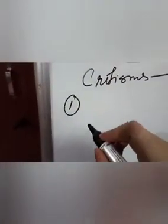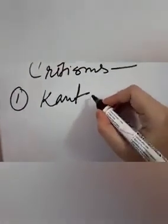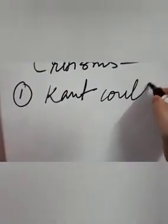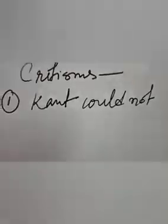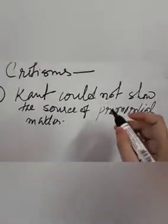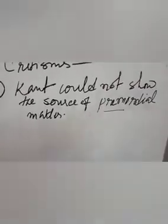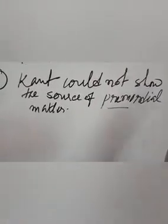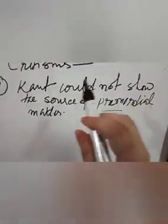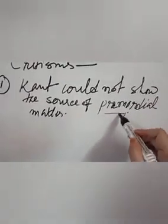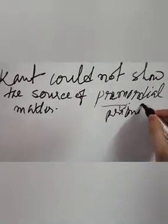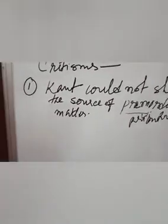The first criticism is that Kant could not show the source of this primordial matter. He said about the existence of the primordial matter — primitive matter — and said that from the primitive matter which was spreading all over the world, our Earth, the Sun, and the stars everything came into existence. But he was not able to show from where this primordial matter or the primitive particulate matter actually came into existence.